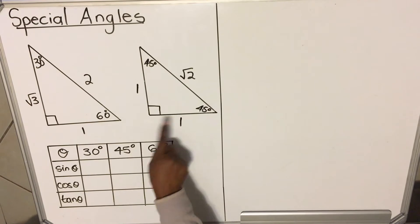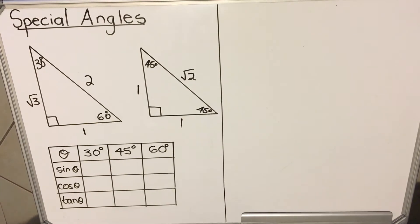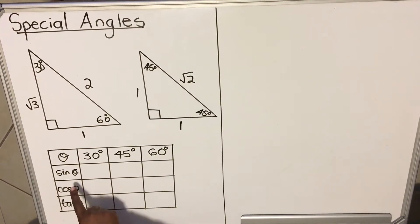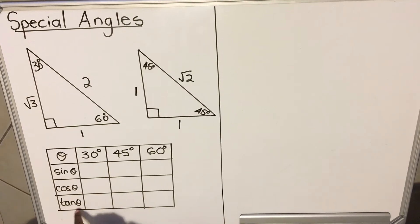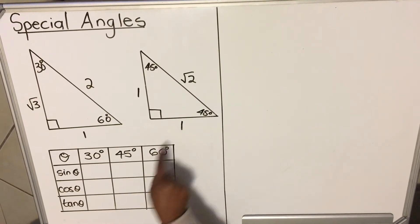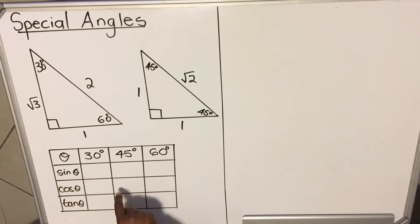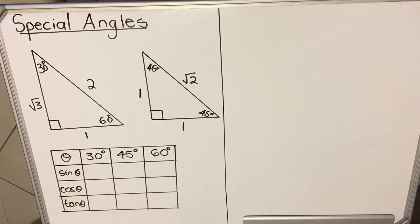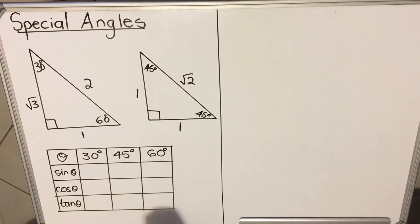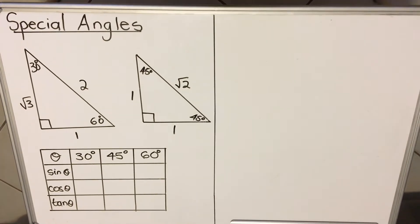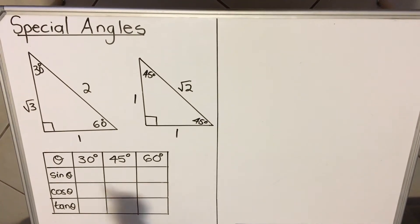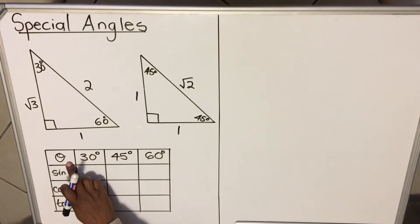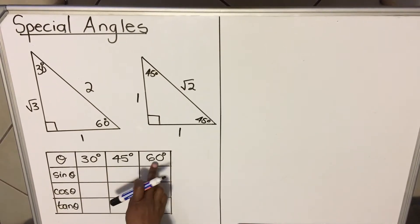So we have two triangles. I'm going to use the first one. With these triangles, we're going to find sine, cos, and tan. Then I'm going to show you how to use a calculator so that you don't need to memorize the triangles or the table. The table goes like this — this is theta, these are angles. Theta could either be 30, 45, or 60.